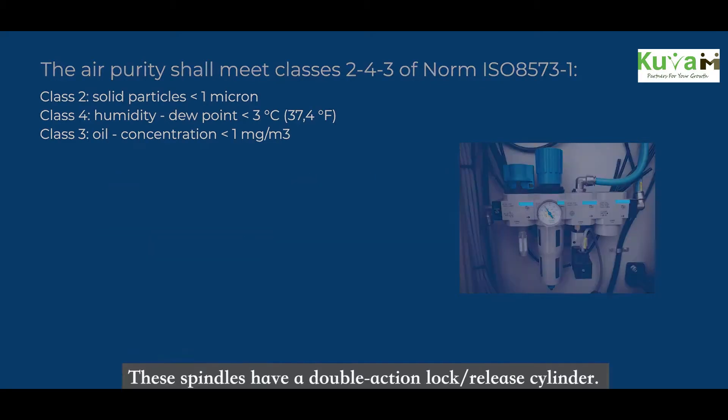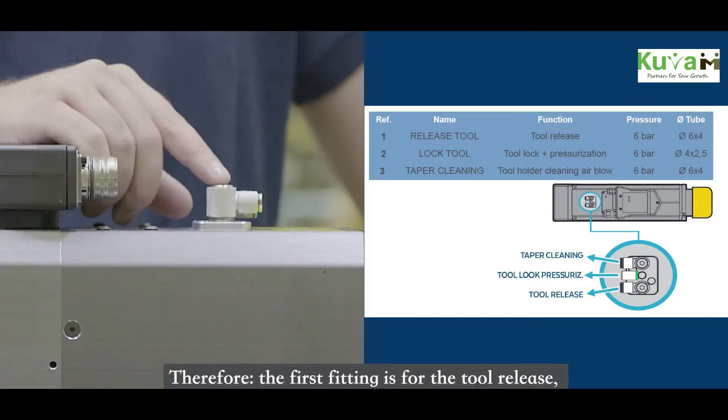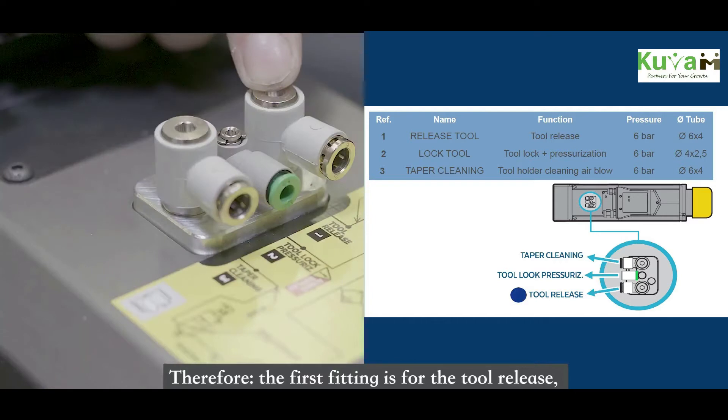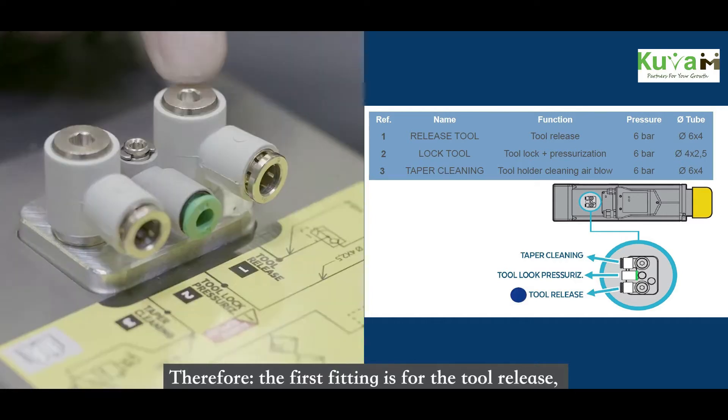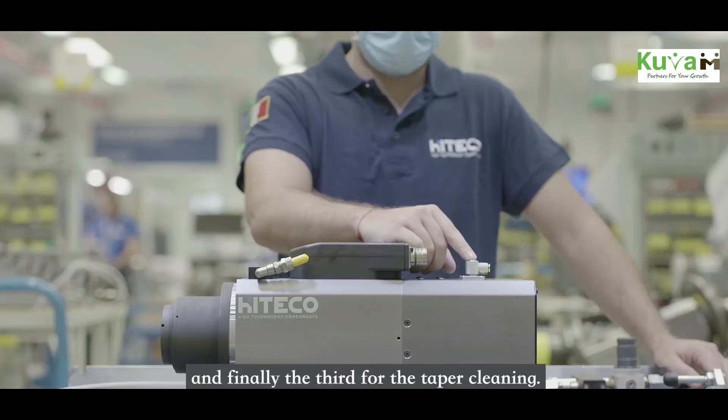These spindles have a double-action lock release cylinder. Therefore, the first fitting is for the tool release, the second for the tool lock and the pressurization, and finally the third for the taper cleaning.